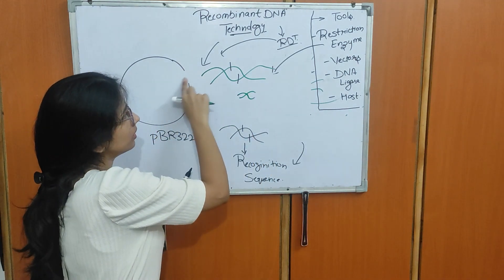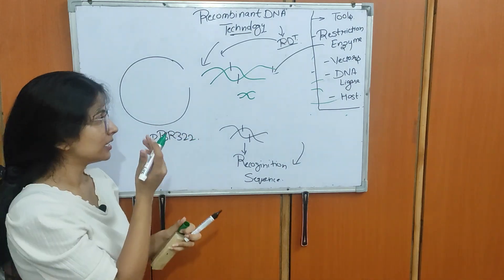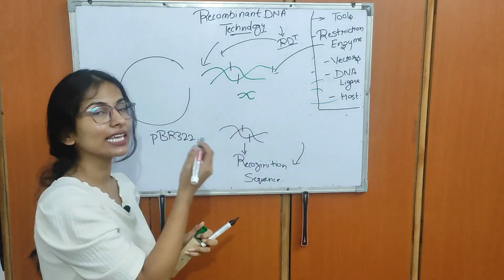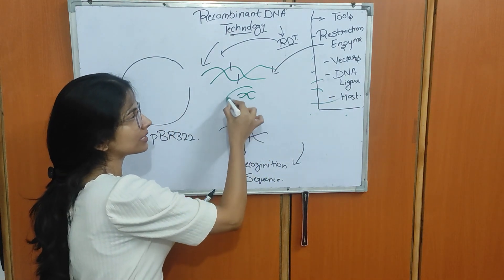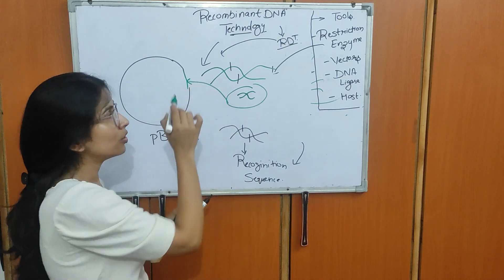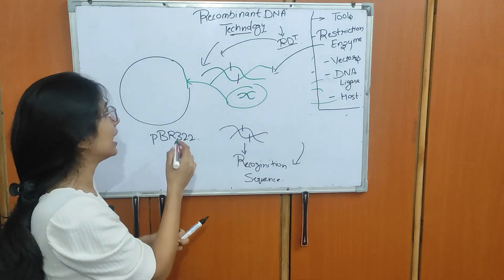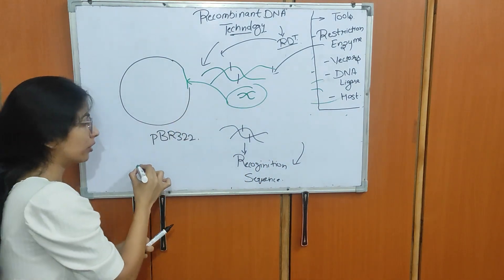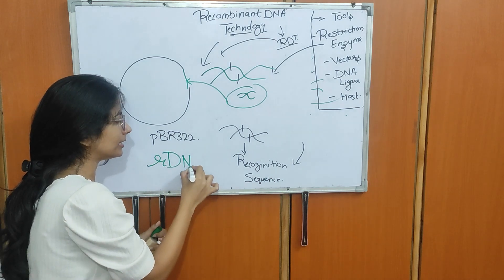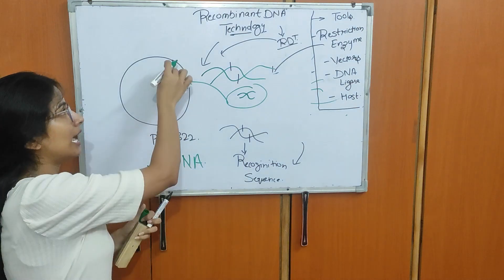I have made a cut on my vector as well. Next we use our glue — DNA ligase. We take our gene and paste it onto the vector with the help of DNA ligase. At the end, what we get is our recombinant DNA — which contains our gene of interest carried by the vector.